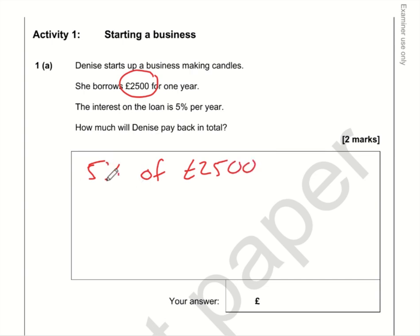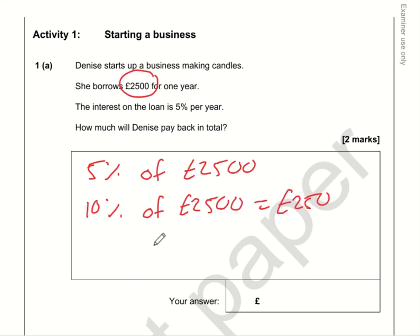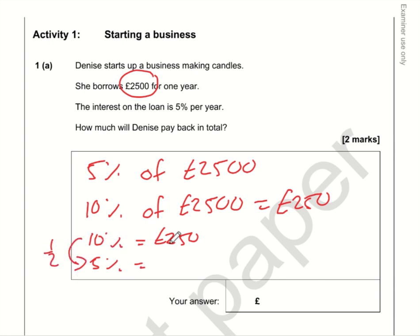Working out 5% comes from working out 10%. 10% is an easy amount to work out — it's one tenth, so divide the amount by 10; in other words, chop off a zero: £250. So if 10% is £250, then 5% is half of 10%, so we want one half of 250. 250 divided by 2 is 125.